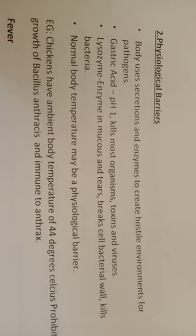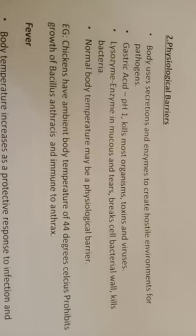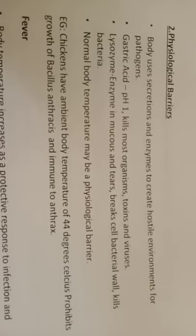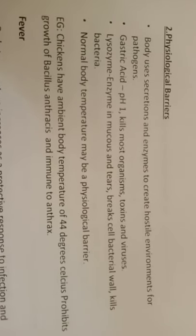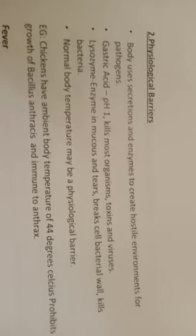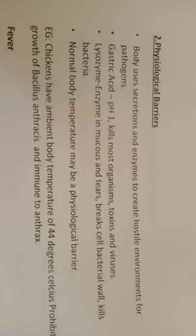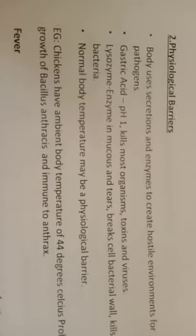The physiological barrier uses secretions and enzymes to create a hostile environment for pathogens. Gastric acid at pH 1 kills most organisms, toxins, and viruses. Lysozyme, an enzyme found in mucus and tears, breaks down bacterial cell walls and kills bacteria. Normal body temperature may also serve as a physiological barrier — for example, chickens have a body temperature of 44 degrees Celsius, which prohibits growth of Bacillus anthracis, making them immune to anthrax.